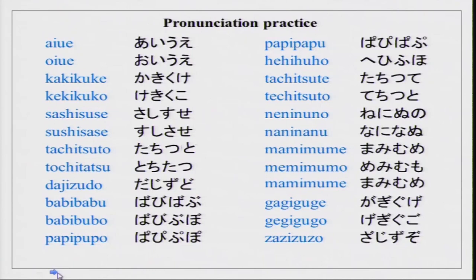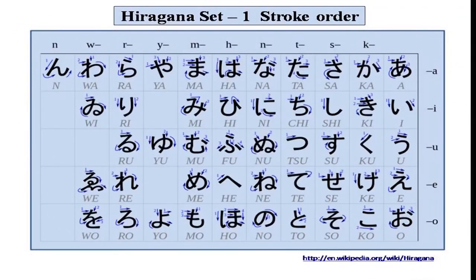I hope now all of you are feeling a little more comfortable with these sounds which are initially a little strange, but then you just get used to them and they sound very normal. Now, we have done about 46 syllables so far. We have done the first set of hiragana. Today we will do the second set of hiragana, which is actually not very difficult because it is made with the help of the first set.